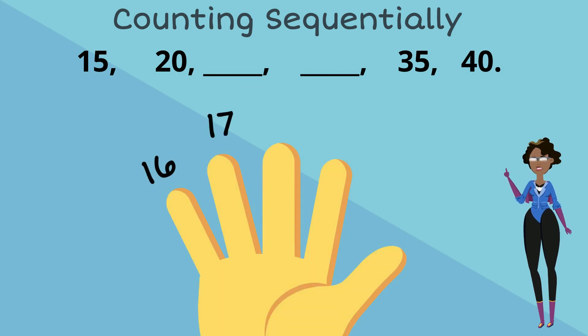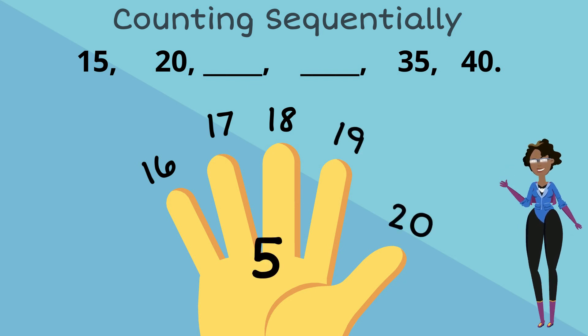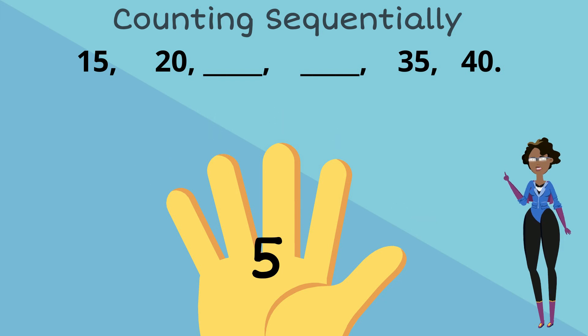Let's count using our fingers: 16, 17, 18, 19, 20. That's 5. So in order to fill in our blanks, we have to skip count sequentially in 5s. So let's do that.